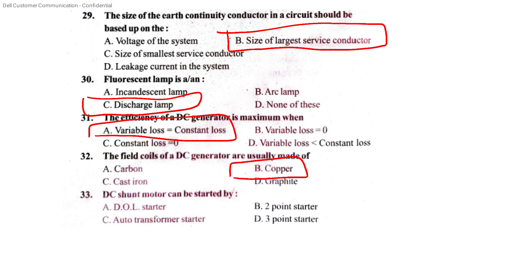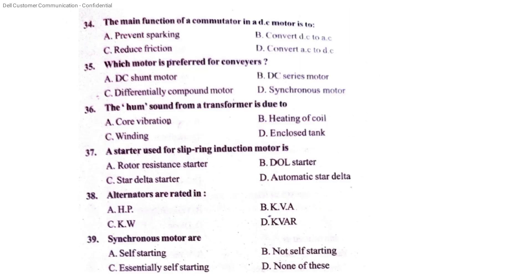DC shunt motor — how is it started? A DC shunt motor uses a 3-point starter. The main function of the commutator in a DC motor is to convert AC to DC. In a generator, it converts AC to DC.